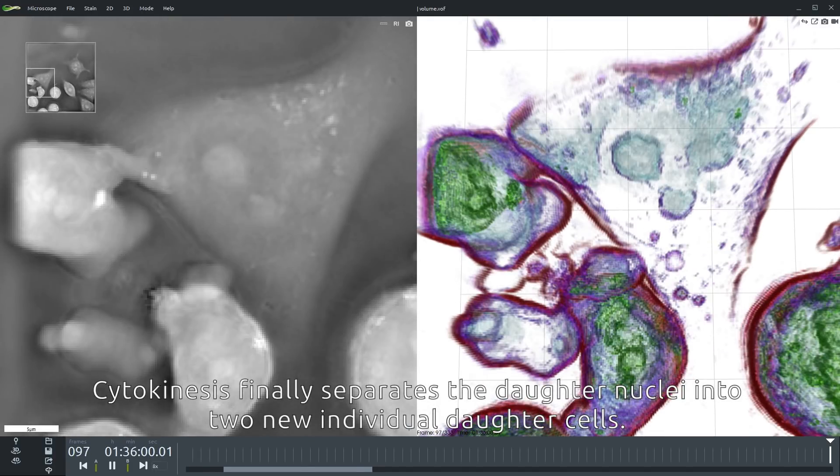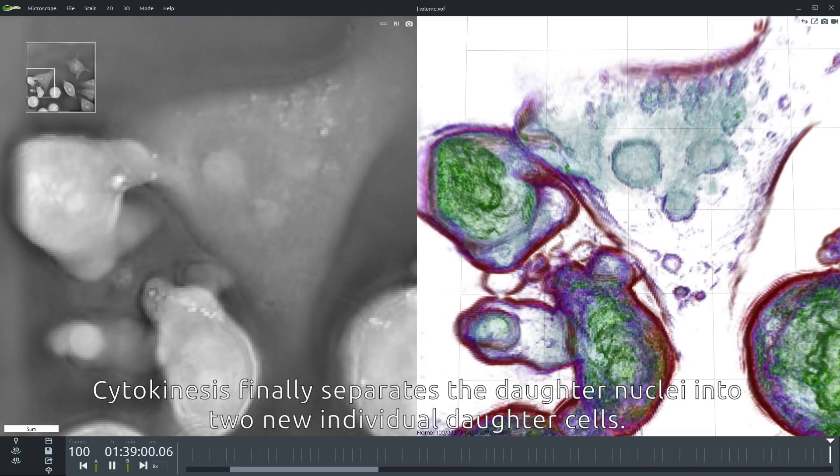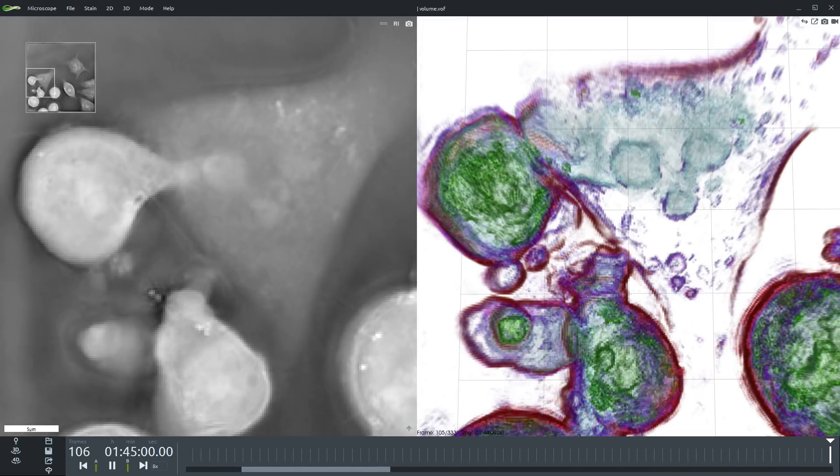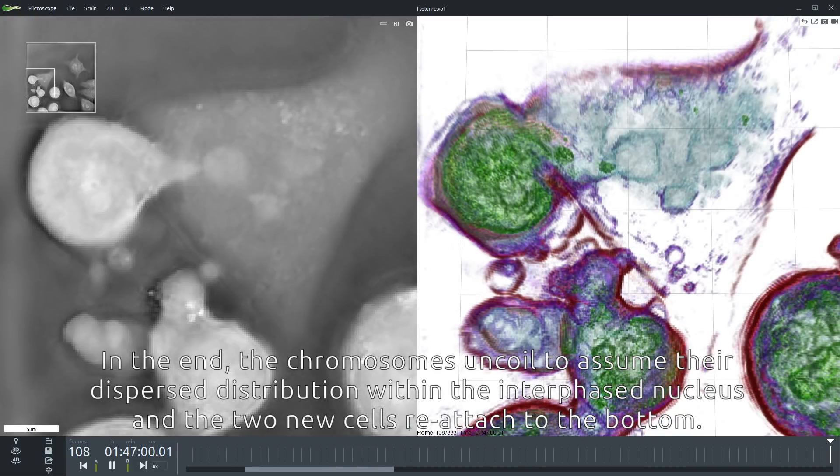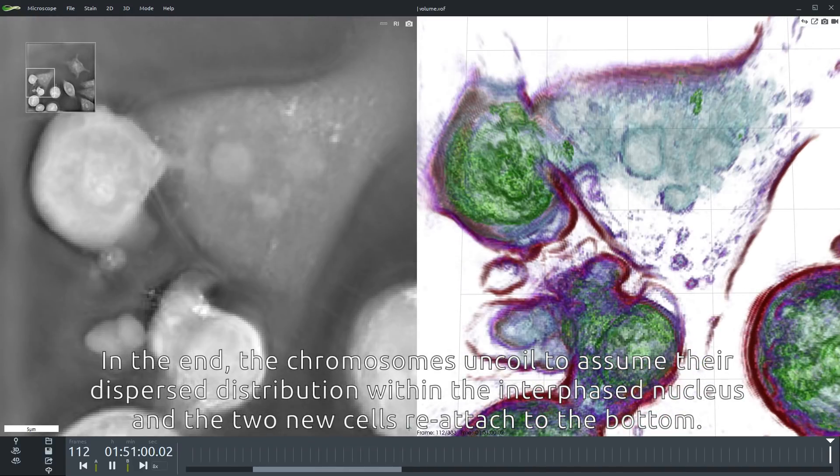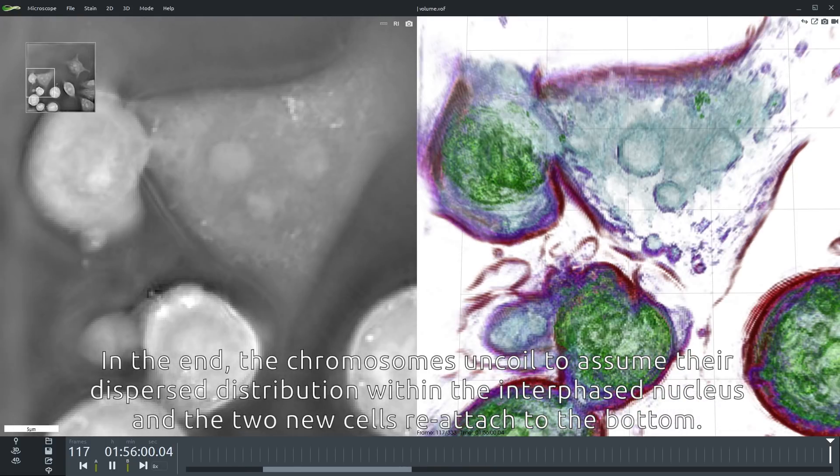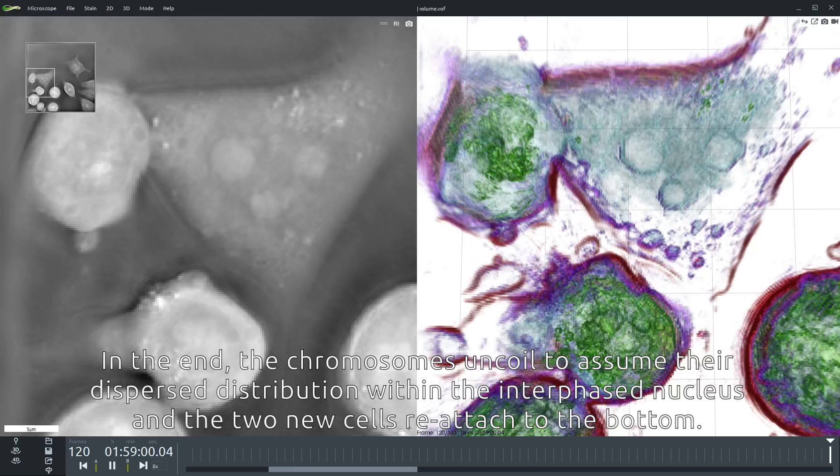Cytokinesis finally separates the daughter nuclei into new individual daughter cells. In the end the chromosomes uncoil to assume their dispersed distribution within the interphase nucleus and the two new cells can reattach to the bottom.